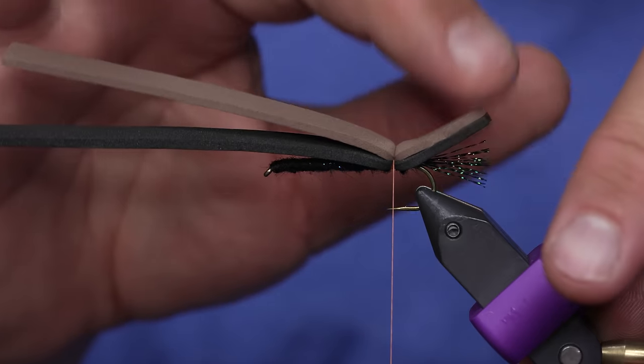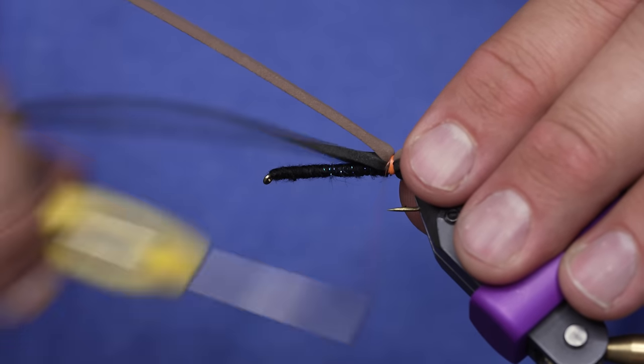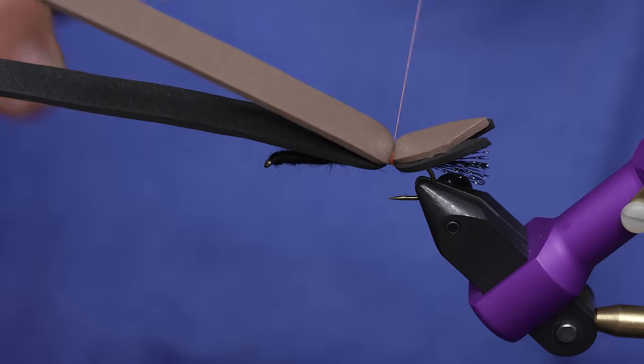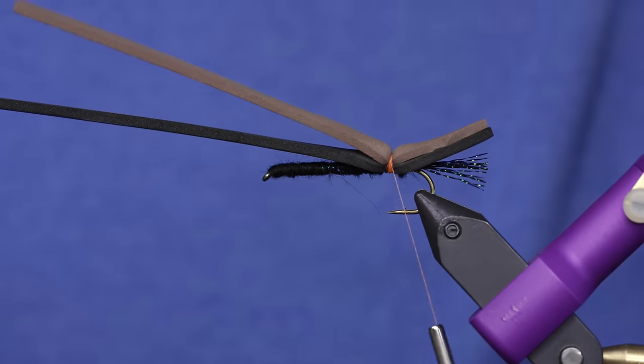So I'm building up a little bit of a band of thread. It just makes it easier to tie the wing and legs in if I do that.